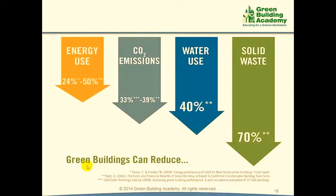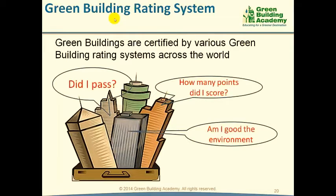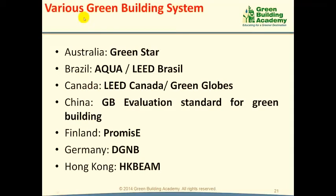Green Buildings can be the solution for all major environmental issues. According to the US Green Building Council, Green Buildings can reduce energy consumption up to 50%, water consumption up to 40%, solid waste generation up to 70%, and CO2 emissions up to 39%. Buildings are certified as Green Buildings by various Green Building Rating Systems, which are tools that assess buildings on aspects like energy efficiency, water efficiency, materials used, location or site, and certify them if they qualify the preset criteria. There are a number of Green Building Rating Systems across the world.